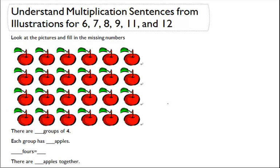So we have to read the story and understand what they want us to do. Here it says there are blank groups of four.